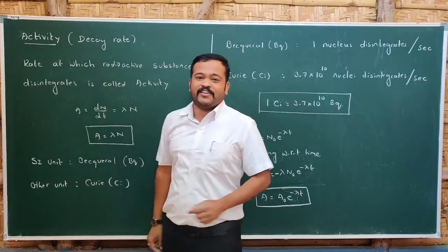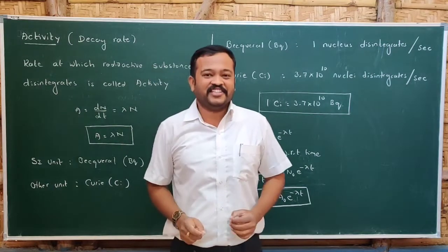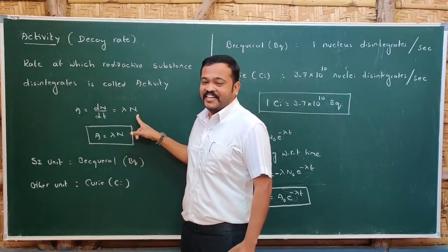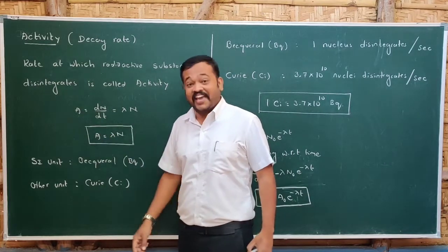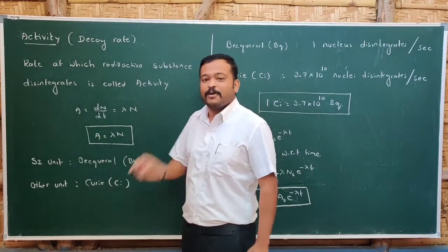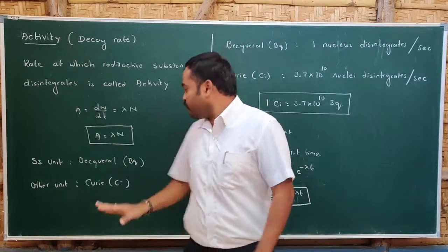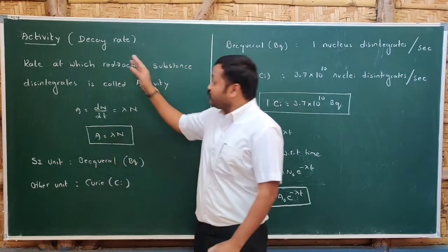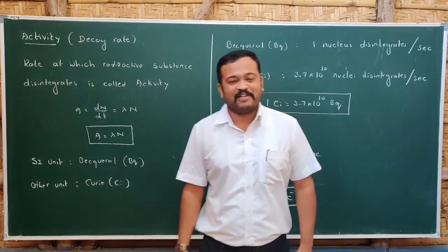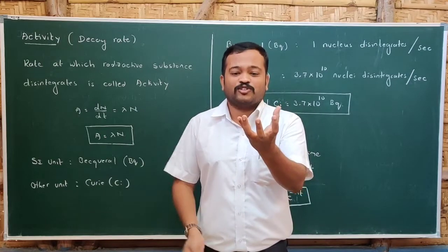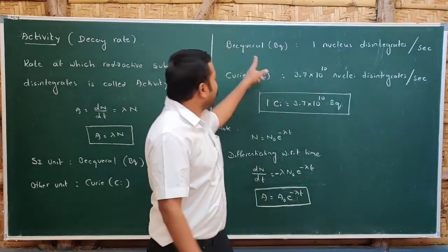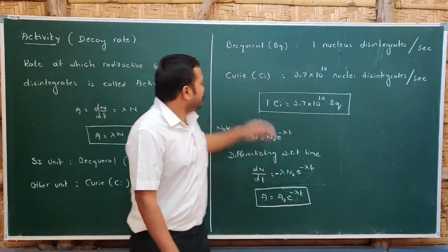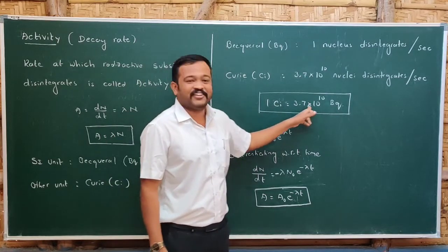The rate of disintegration of a radioactive substance is called its activity. Activity A = λN, and its SI unit is the Becquerel (Bq), named after Henri Becquerel. If one nucleus disintegrates per second, that is one Becquerel. Another unit is the Curie (Ci): if 3.7 × 10¹⁰ nuclei disintegrate per second, that is one Curie. The relation is: 1 Ci = 3.7 × 10¹⁰ Bq.